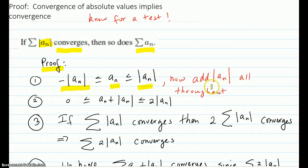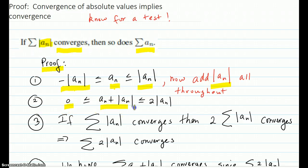We add |a_n| throughout the inequality statement on all three parts. This gives you zero on the left, it adds in the middle, and on the right you get two times |a_n|.